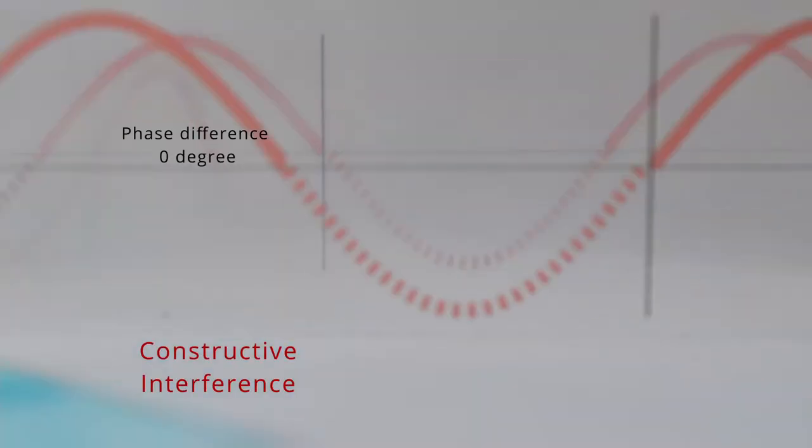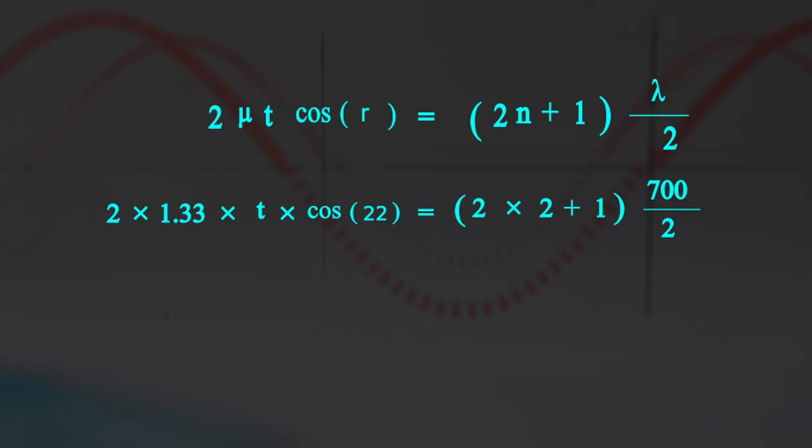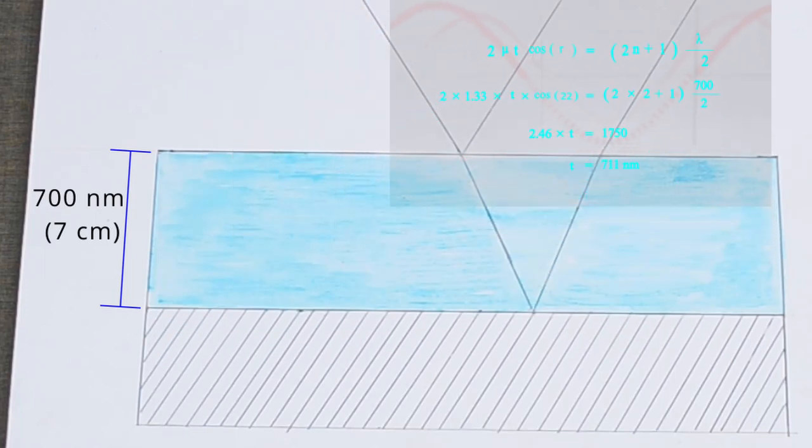Now let us verify it with a formula for constructive interference for thin films, where mu is refractive index of a denser medium, t is the thickness of the thin film while r is the angle of refraction. Lambda is the wavelength of light in air. With the value of n as 2, we can replace known values and find out thickness of the film. It comes out to be 711 nm. It is quite close to our value of 700 nm. In our case, 7 cm.